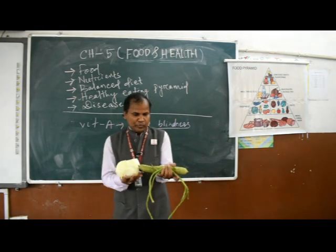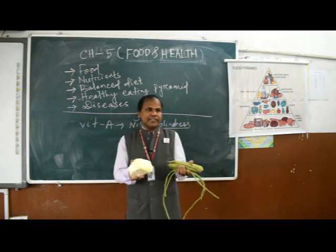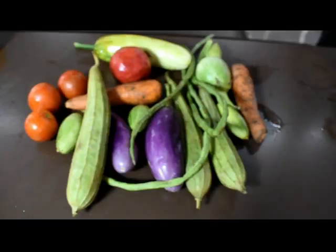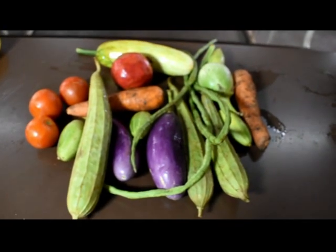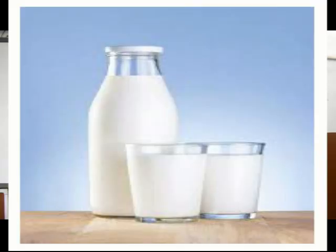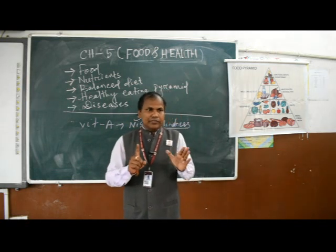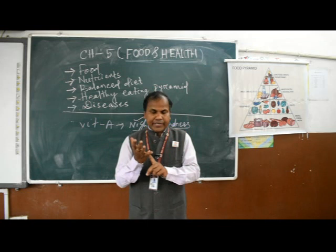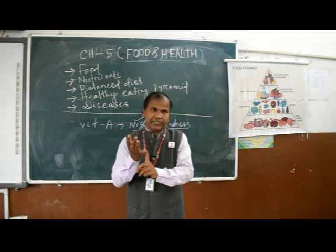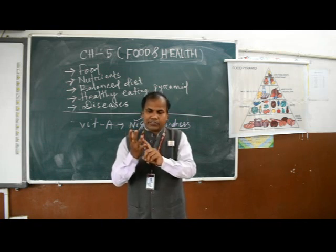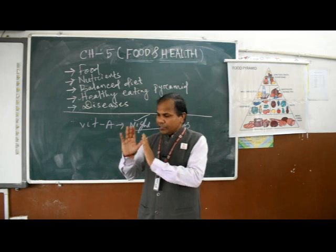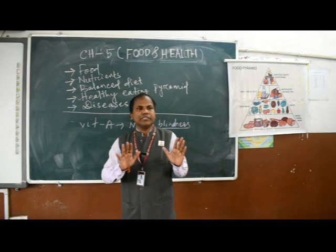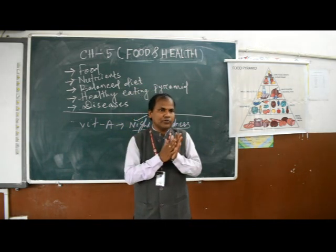These are some vegetables that if taken in our diet can help avoid Vitamin A deficiency disease. Also, if you drink milk regularly, you can avoid most vitamin and mineral deficiency diseases, since milk contains Vitamin A, Vitamin B, Vitamin D, and minerals like calcium and phosphorus, as well as iron. So milk is a very important food in our diet.